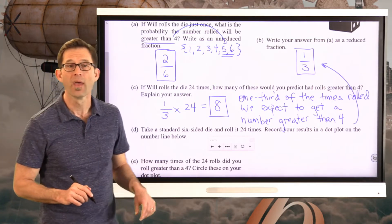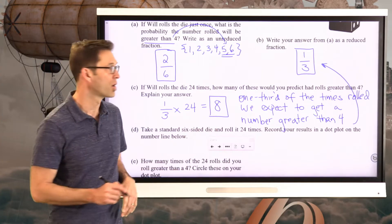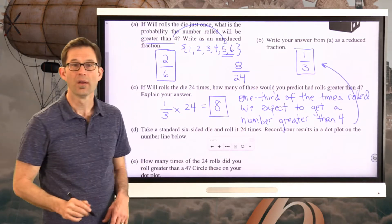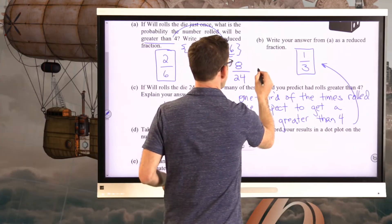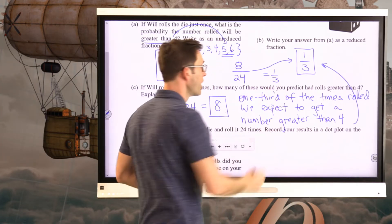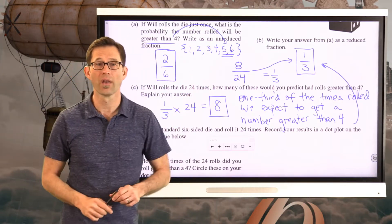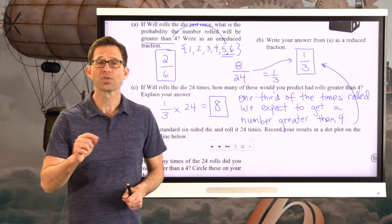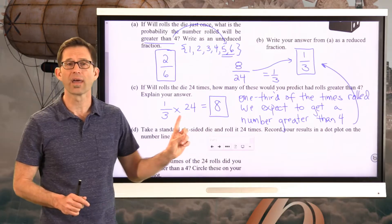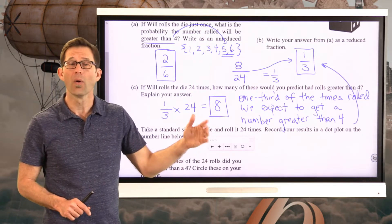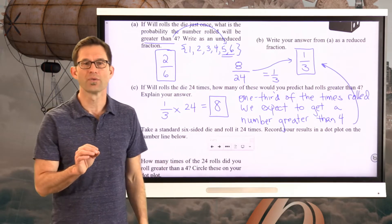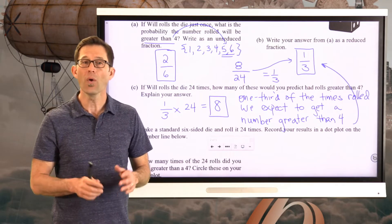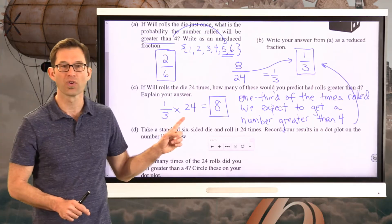Explain your answer: 1/3 of the times rolled, we expect to get a number greater than 4. And that's exactly what that probability tells us. Just notice, if I took this 8 and this 24 and I formed a ratio with them, 8/24, then to no great surprise that ratio equals 1/3. That's another way to do this problem. But at the end of the day, I really want you to understand that the probability is the fraction of the total times we expect something to happen.